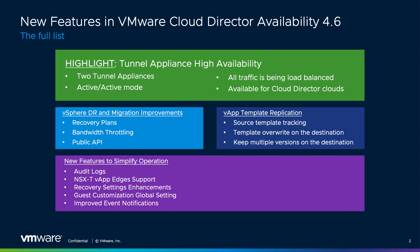In 4.6, we address this concern by enabling High Availability, which is made possible by deploying a second Tunnel Appliance. The two operate in Active-Active mode and require an external load balancer. This design may also positively impact performance, as traffic will be balanced between them. Please note that this architecture is only available for VMware Cloud Director clouds.